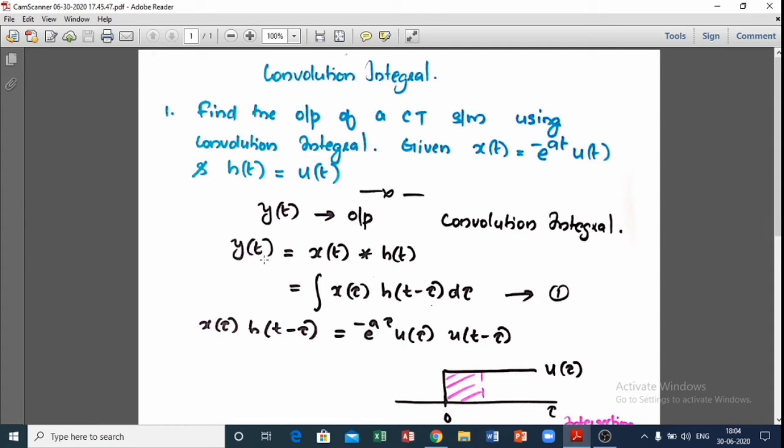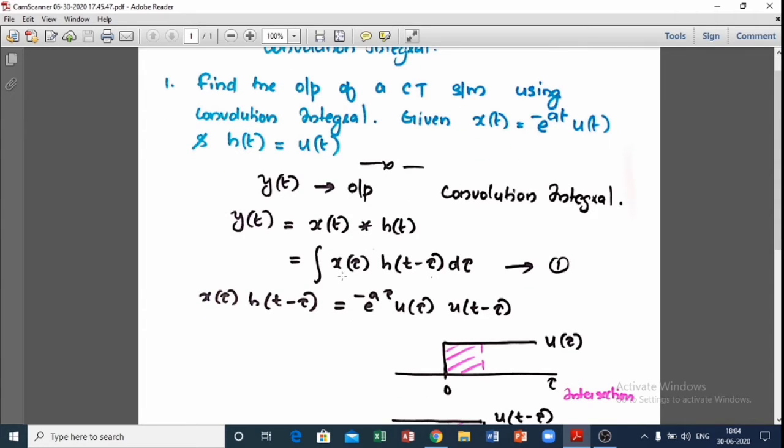y(t) output equals x(t) convolution h(t). Now the CT system output is obtained by convoluting x(t) with h(t). We know the equation of convolution is given by integral x(τ)h(t-τ)dτ. This is the equation of convolution integral of a CT system.